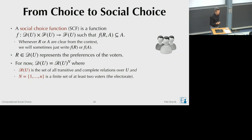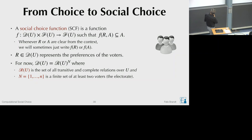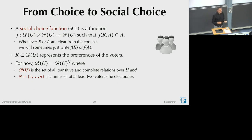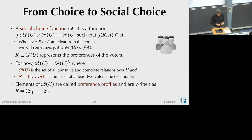The set of voters, for the first couple of lectures, is just the numbers one to n, giving us n different voters. D(U) is therefore a notation for the set of functions from N to R(U)—mapping each voter to a preference relation. Each voter has one preference relation, and this is precisely what we represent in variable R, which is part of the input of a social choice function.